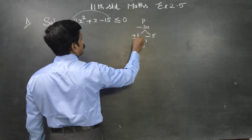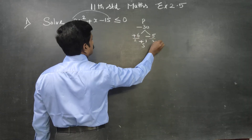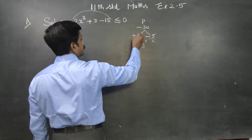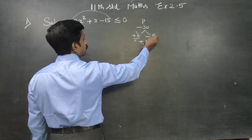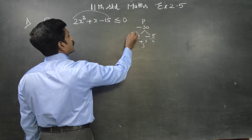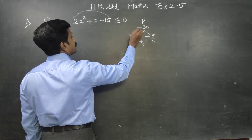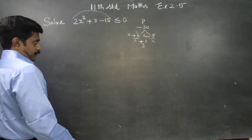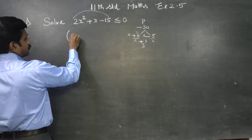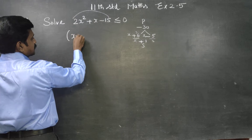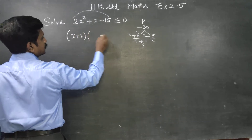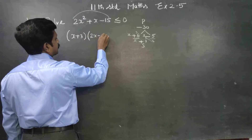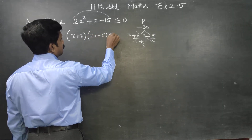Dividing by 2, there is a number. If you cancel it, you will have 3. If you cancel it, your answer will be x plus 3. If you cancel it, it will be 2x minus 5.